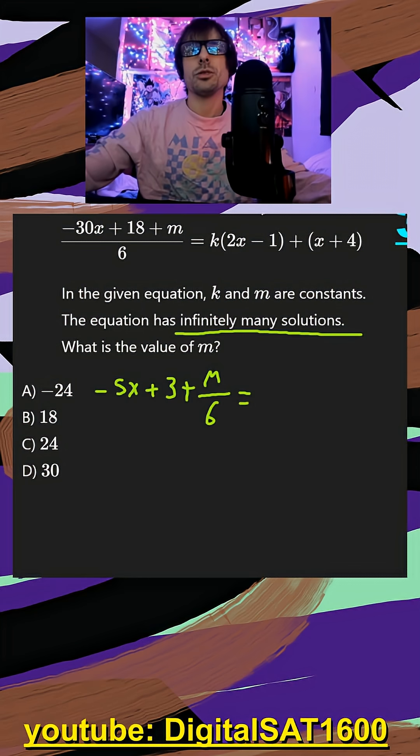And that should be equal to, we can do a little distributing up here and then combine like terms. So this should get us 2kx minus k plus x plus 4.